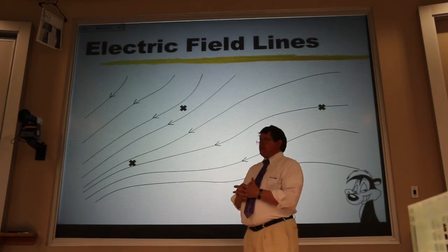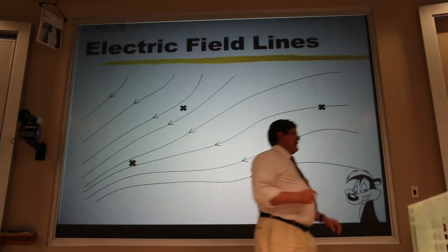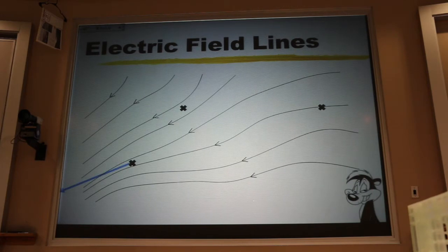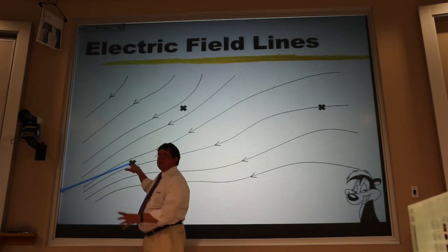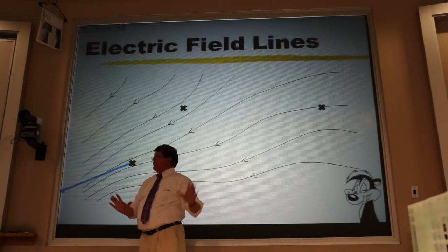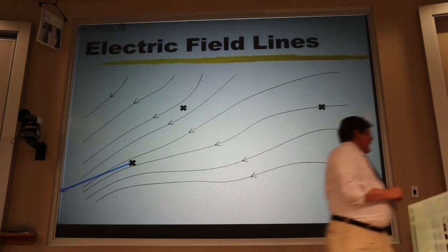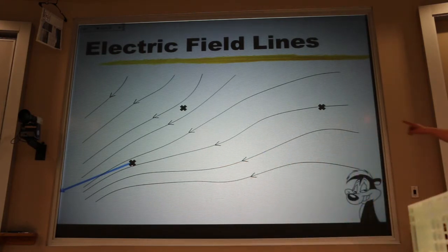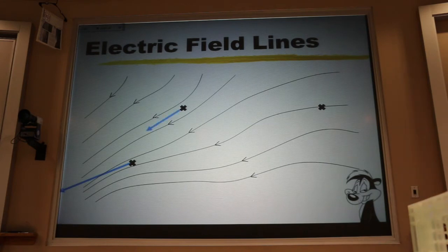Quick review of field lines: where they're close together, the electric field is strong. A vector shows the field at one specific location only; field lines paint the picture everywhere. At the next X, the spacing is further apart, so the field is weaker. At the third location, the field lines are really far apart—the weakest field.